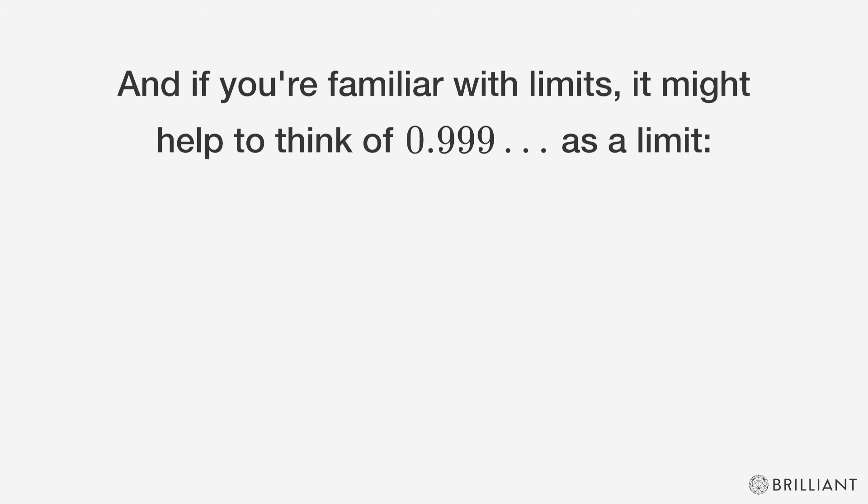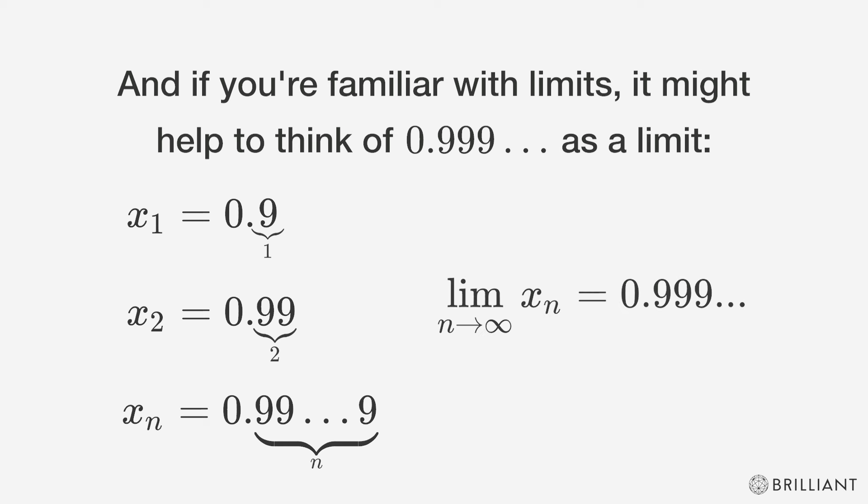And if you're familiar with limits, it might help to think of 0.999 repeating as a limit. Consider this sequence: x sub 1 is 0.9, x sub 2 is 0.99, and in general, x sub n has n nines after the decimal. The limit of this sequence as n goes to infinity is 0.999 repeating, or 1.